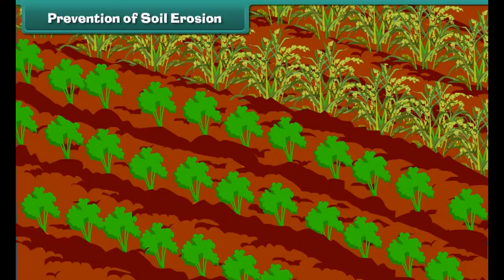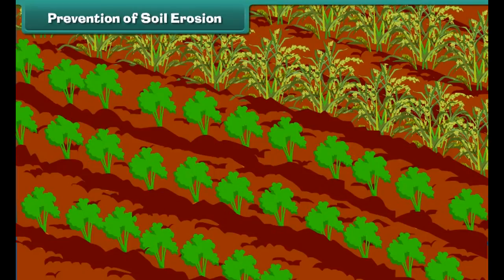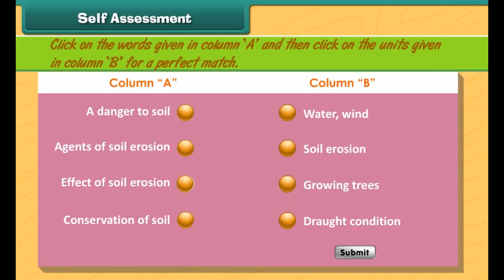Some modern techniques of farming need to be practiced. For example, different types of crops should be grown at different times on the same land. Different types of crops should be grown in alternate rows in the same land. These practices control the loss of soil and increase the fertility of soil.